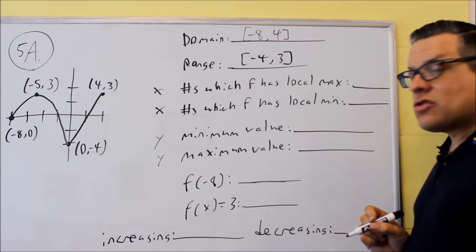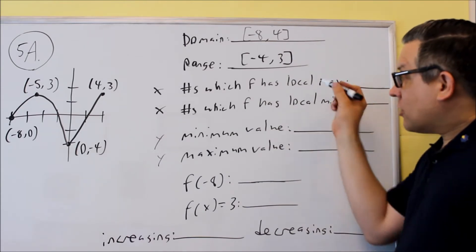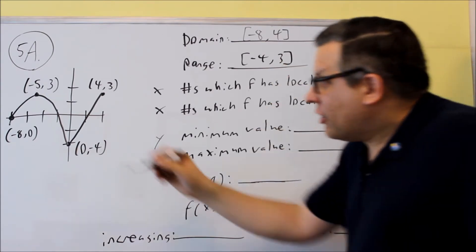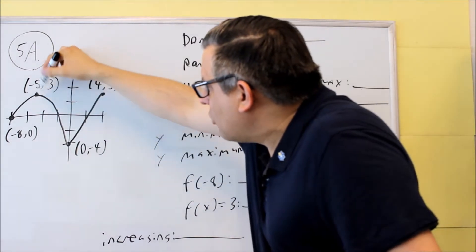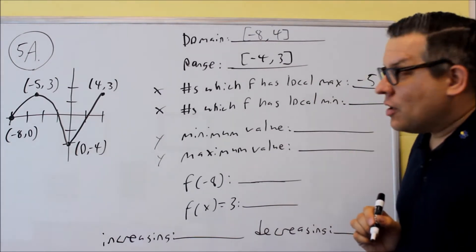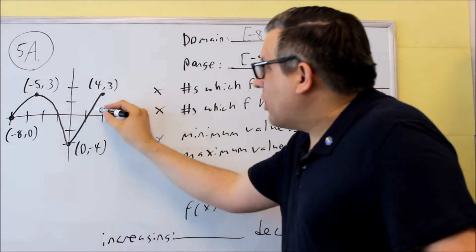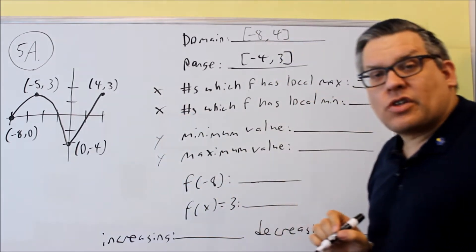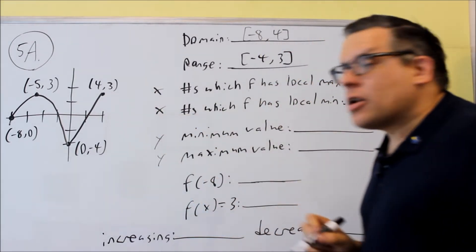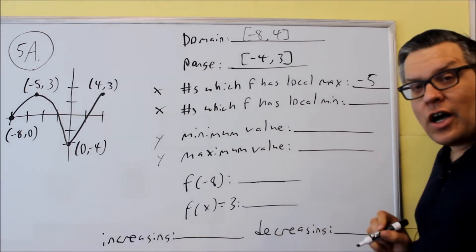Numbers at which f has a local max. Okay, so you're looking for the x value where you have a hill, where it goes up and then it goes down. The x value where that occurs is this one right here. That's going to be at negative 5. So you have to have some kind of hill. This point at 4 comma 3 is not considered a local max because we don't have a decreasing part that comes afterwards. So our answer is just going to be negative 5.